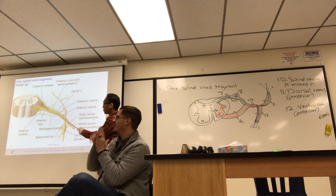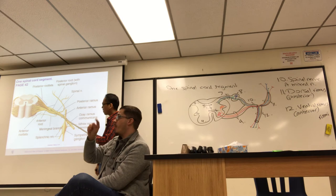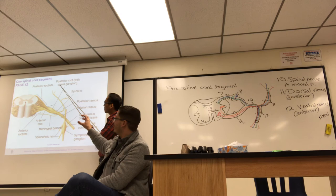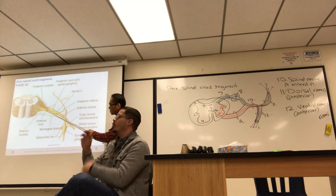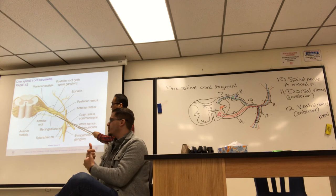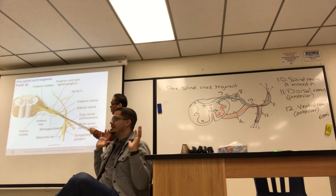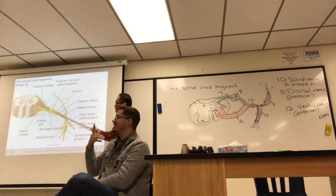Using the figure for review: the posterior root has the ganglion — also called the spinal ganglion or posterior root ganglion. The anterior root is only motor. The posterior root is only sensory. Then for a very short distance they form the spinal nerve before it immediately divides.